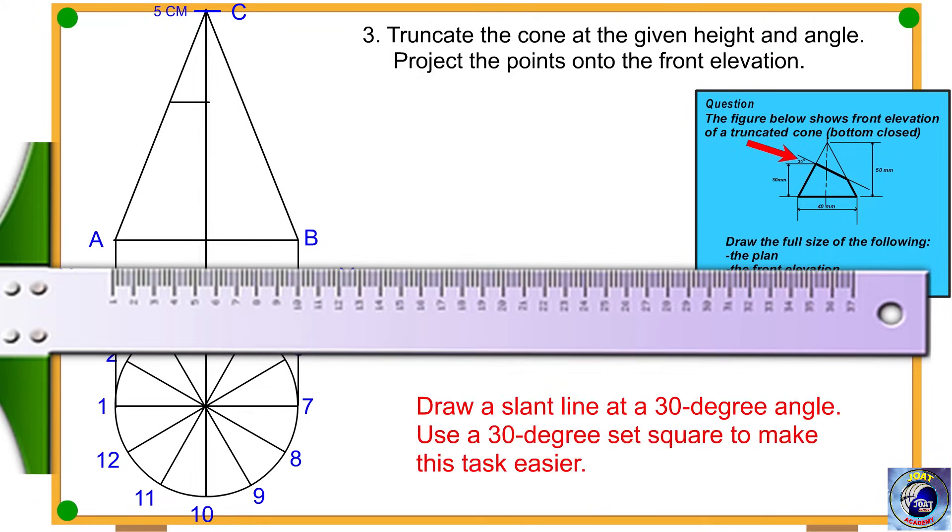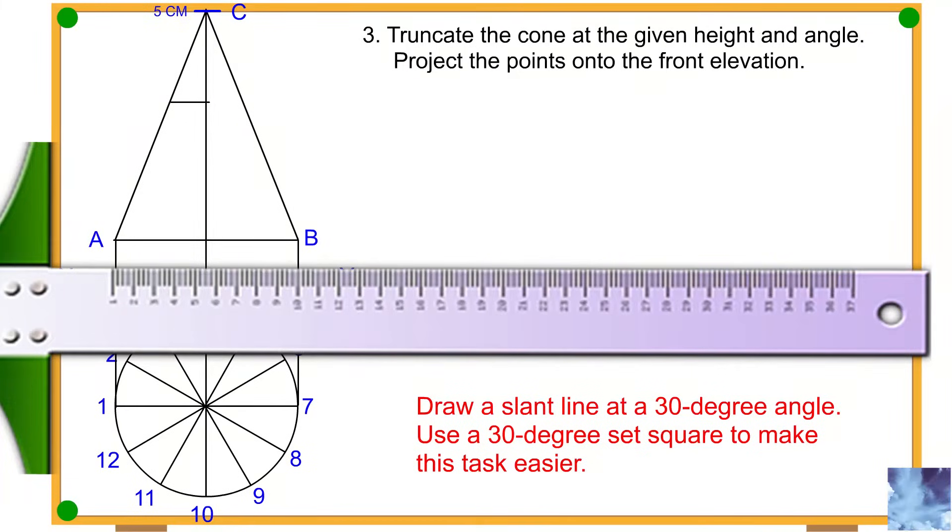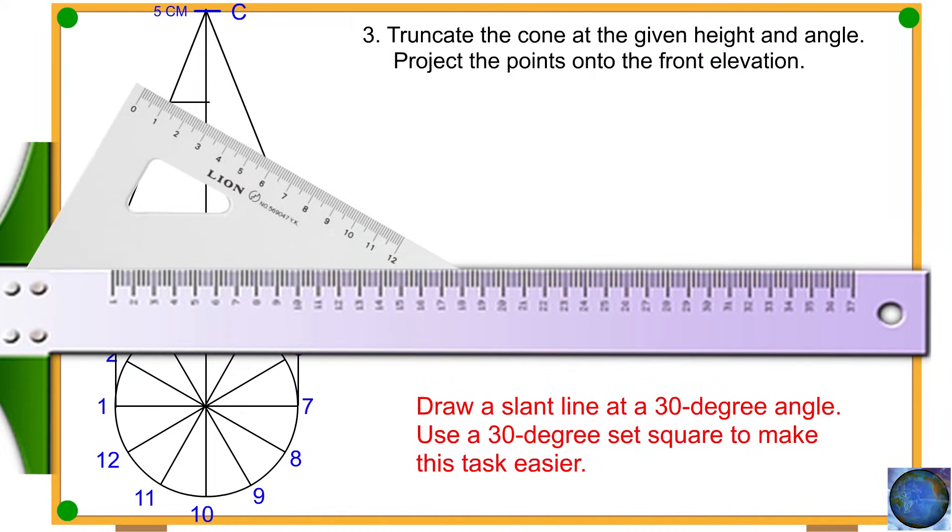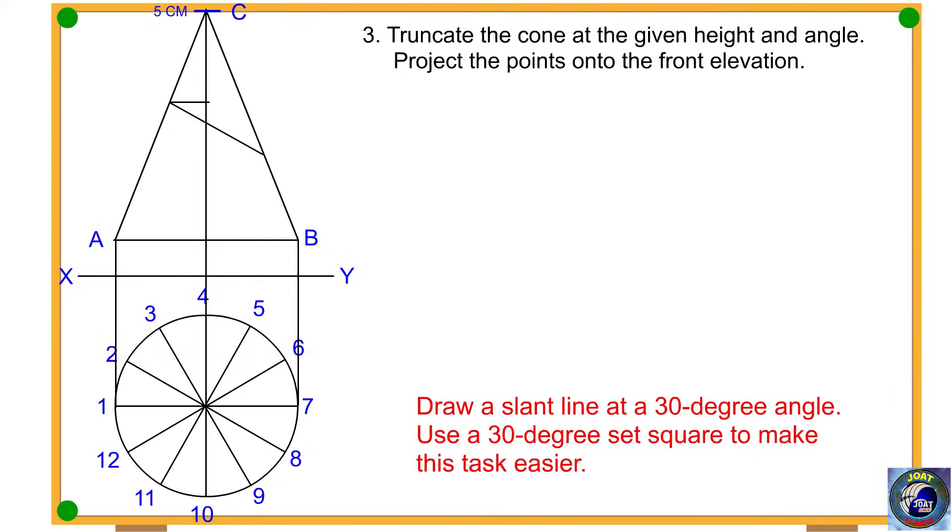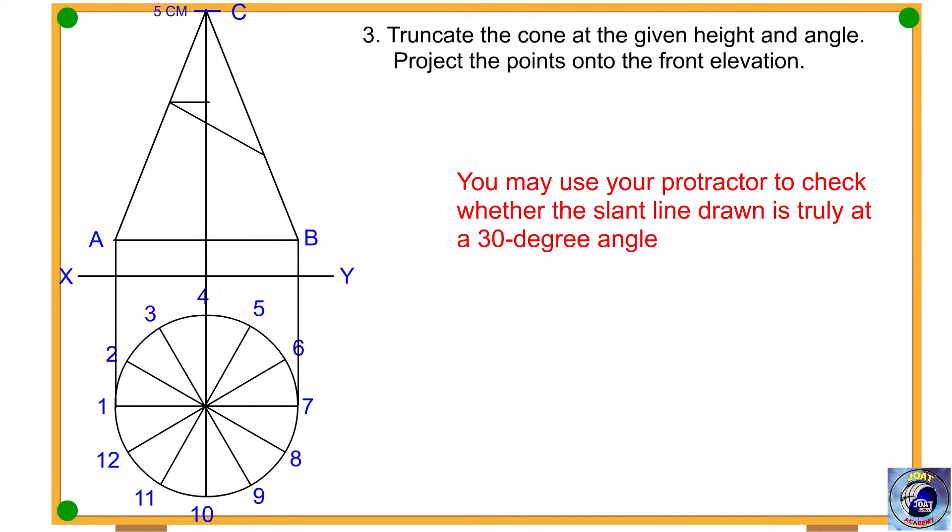Procedure 4: Draw a slant line at a 30 degree angle. Use a 30 degree set square to make this task easier. You may use your protractor to check whether the slant line drawn is truly at a 30 degree angle.